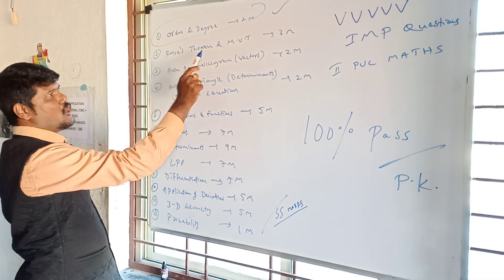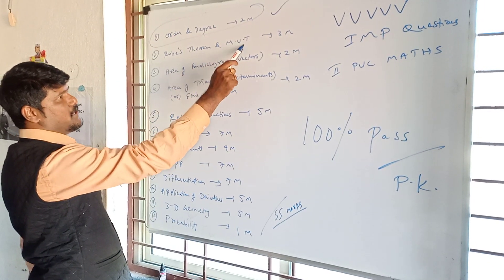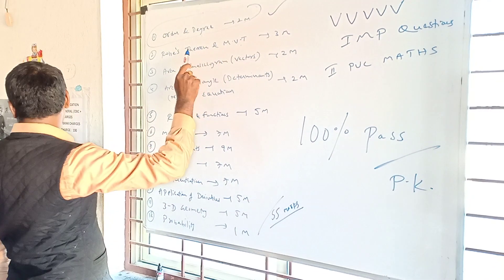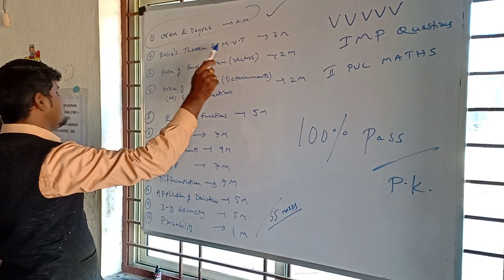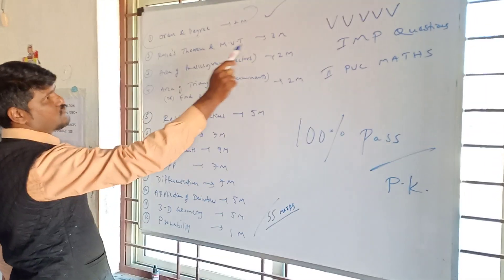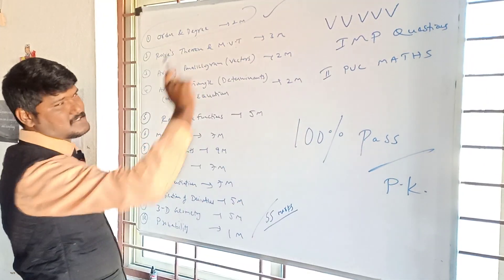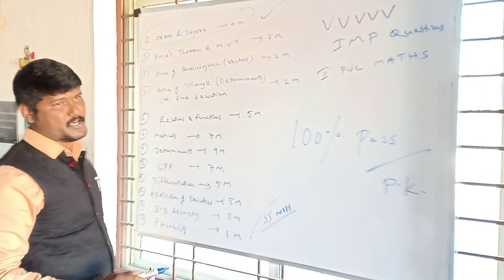The 2nd question: Rolle's theorem or Mean Value Theorem. This is a 3-mark question — very, very important.